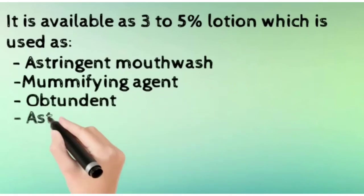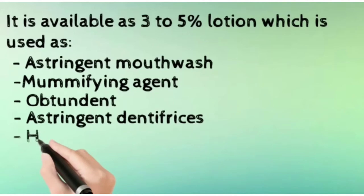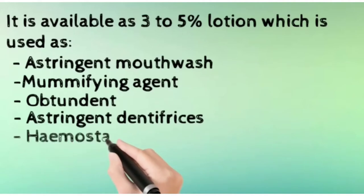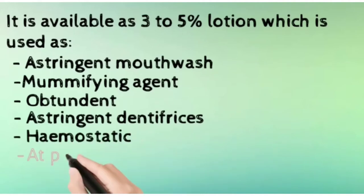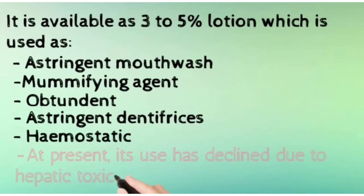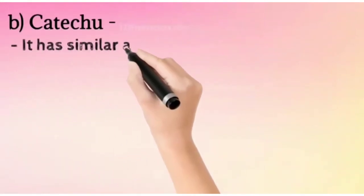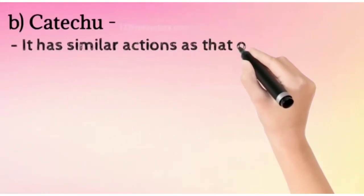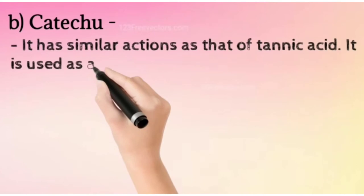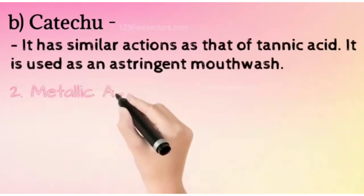It is also available as astringent dentifrice and hemostatic. At present, its use is avoided because of its hepatic toxicity on absorption. Then, we have katechu. Its actions are similar to that of tannic acid, and it is used as an astringent mouthwash.